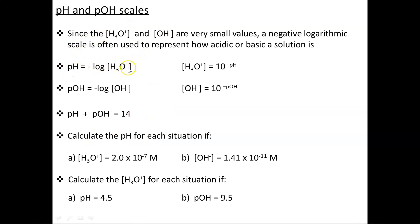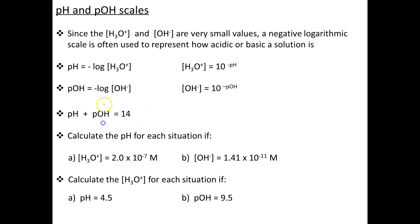While the pH scale measures how much hydronium is in solution — how acidic it is — the pOH scale measures how much hydroxide is in solution, so how basic it is. The pH and pOH scales are identical in that they're both negative logarithms — they just measure different components. The pOH equation is identical to the pH equation: just replace hydronium with hydroxide and pH with pOH. If you ever need to convert between the two, remember that pH plus pOH always adds up to 14.